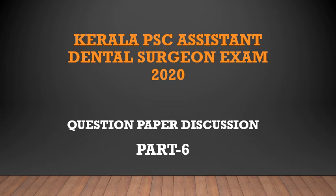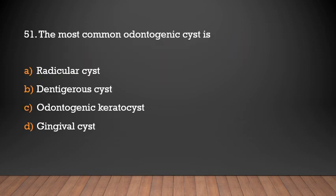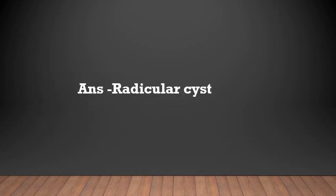Hello friends, welcome to A2C Dentistry. The most common odontogenic cyst is: radicular cyst, dentigerous cyst, odontogenic keratocyst, gingival cyst. Answer: Radicular cyst is the most common odontogenic cyst.